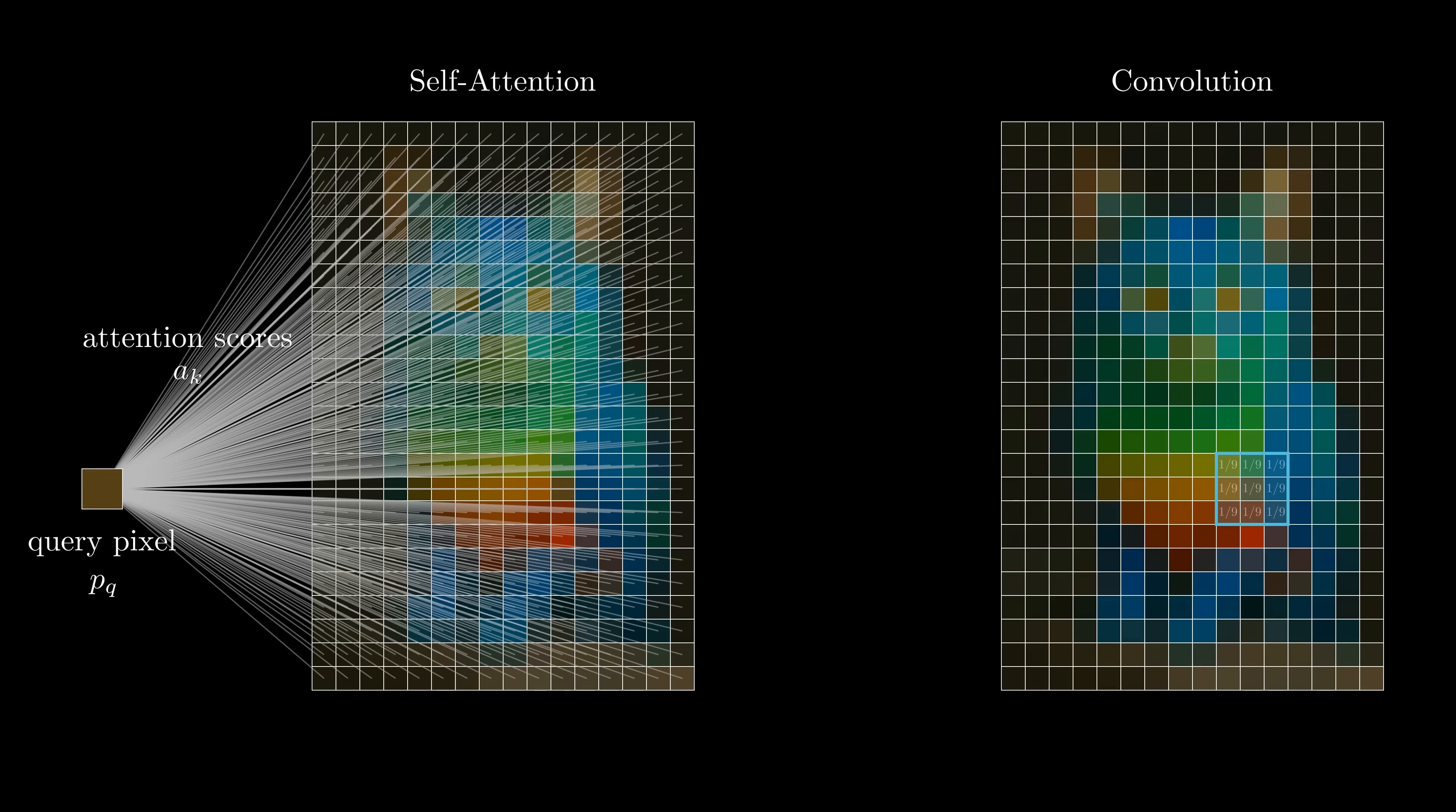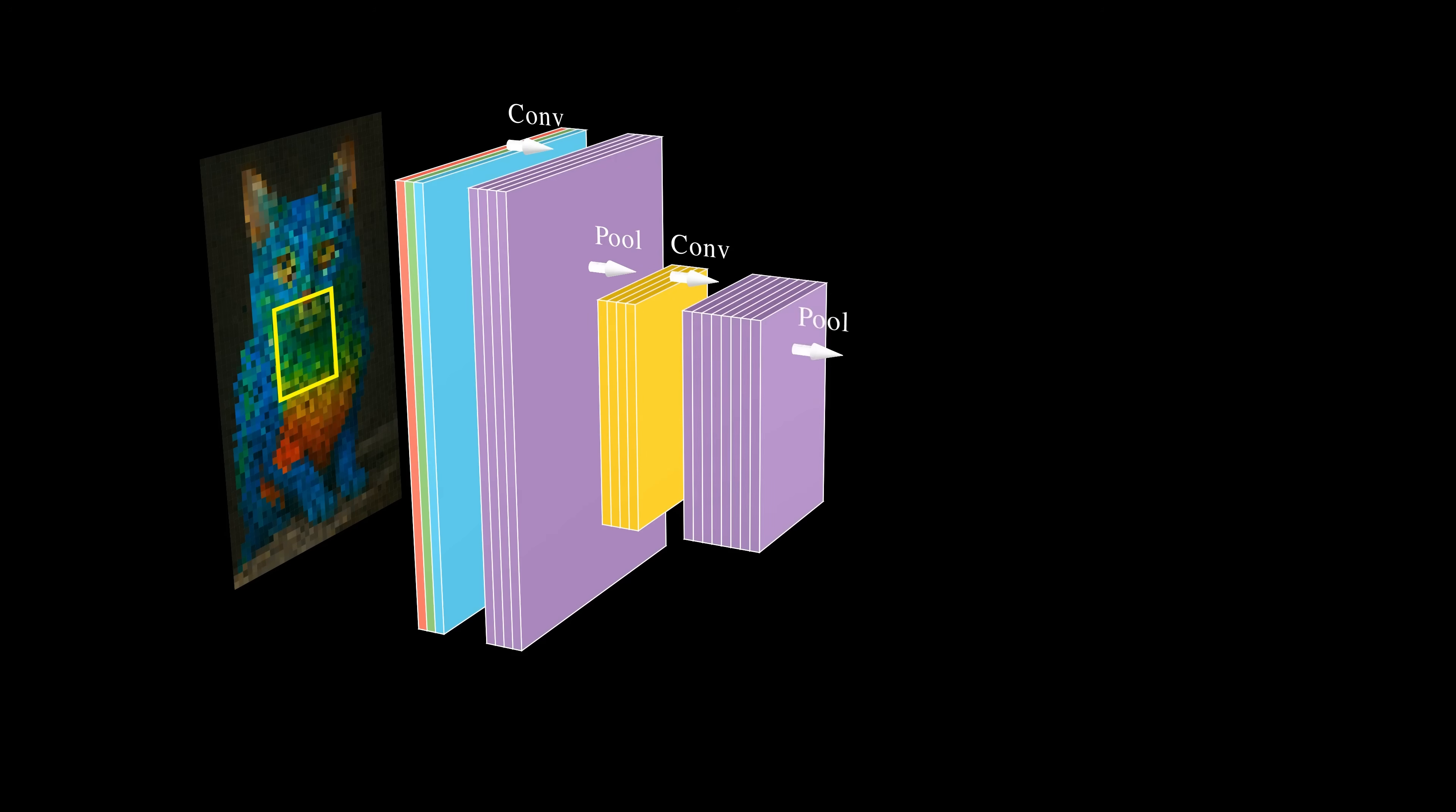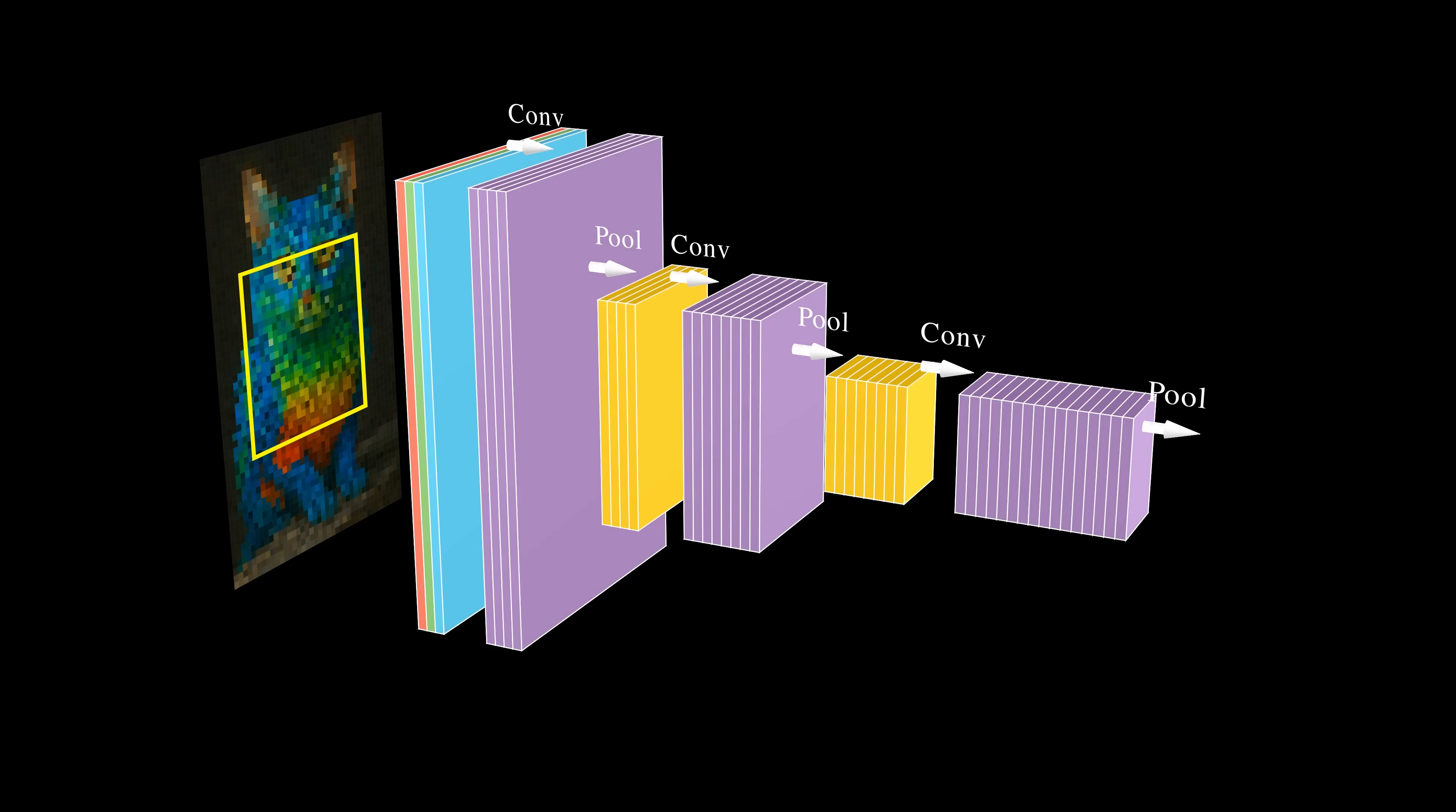When we compare convolution and self-attention side by side, one difference jumps out immediately. A convolutional layer has a strictly local receptive field. Each pixel can only interact with its neighbors. Self-attention has no such constraint. A pixel can look at any other pixel in the image in a single step. Now, CNNs do accumulate some long-range interactions through depth. As you stack layers and pool features, the effective receptive field grows. But that's an indirect, multi-step path. It's not the same as the top left pixel directly attending to the bottom right pixel.